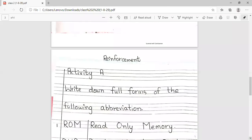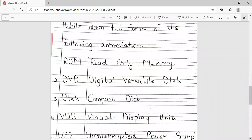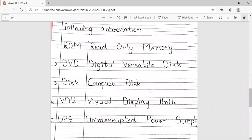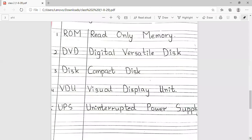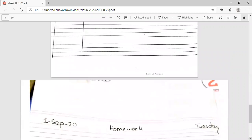Then we will start the new page with reinforcement. Write down full forms of the following abbreviations: ROM - Read Only Memory, DVD - Digital Versatile Disk, CD - Compact Disc, VDU - Visual Display Unit, UPS - Uninterrupted Power Supply.